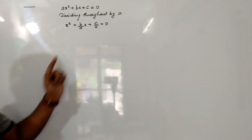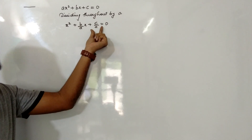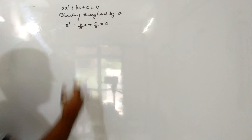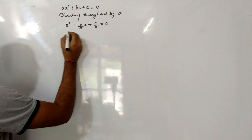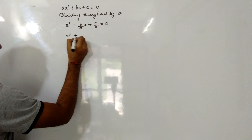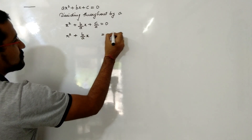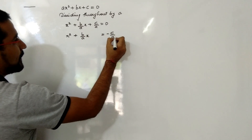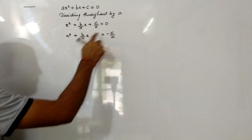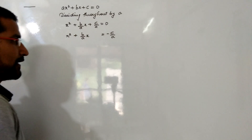The next step is that the constant term should be on the right hand side. So we will shift c/a to the RHS, giving x² + (b/a)x = −c/a.